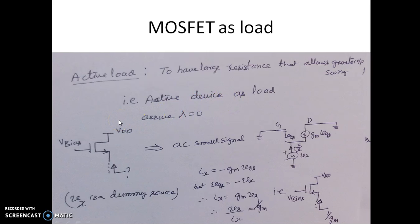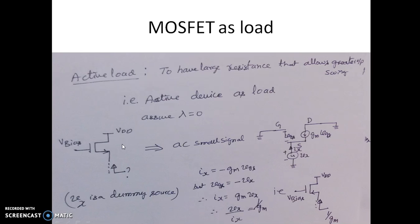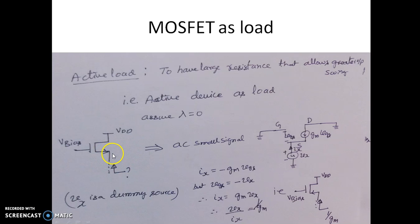Now we consider a particular MOSFET diagram. The dotted line indicates there is a circuit behind — some circuit which is left out. We are considering only this MOSFET and trying to analyze what is the resistance seen from the source side. Suppose this MOSFET is connected as load; the gate will be applied with a bias voltage V_bias. There is no small signal applied here. We will do the AC small signal analysis.